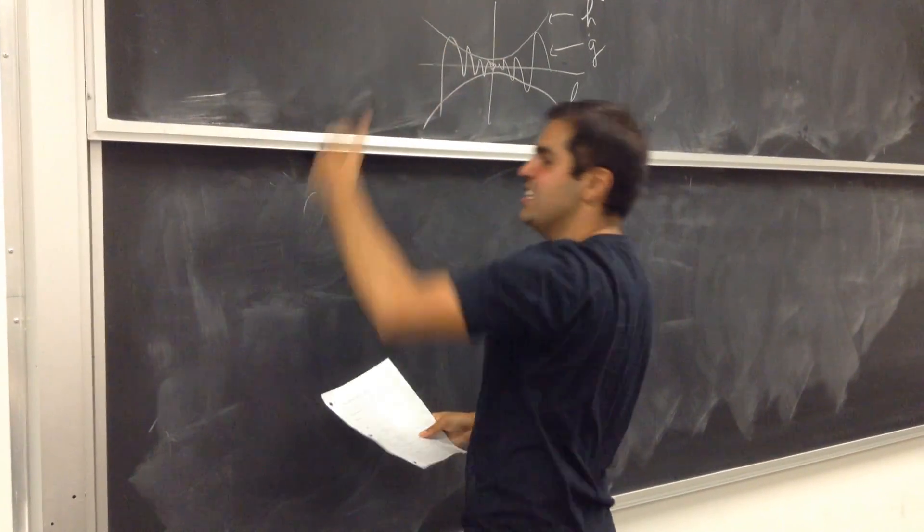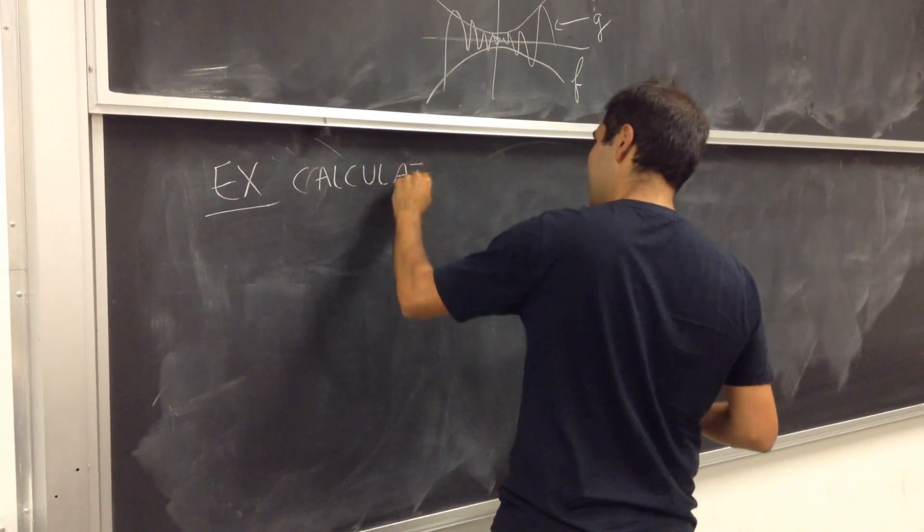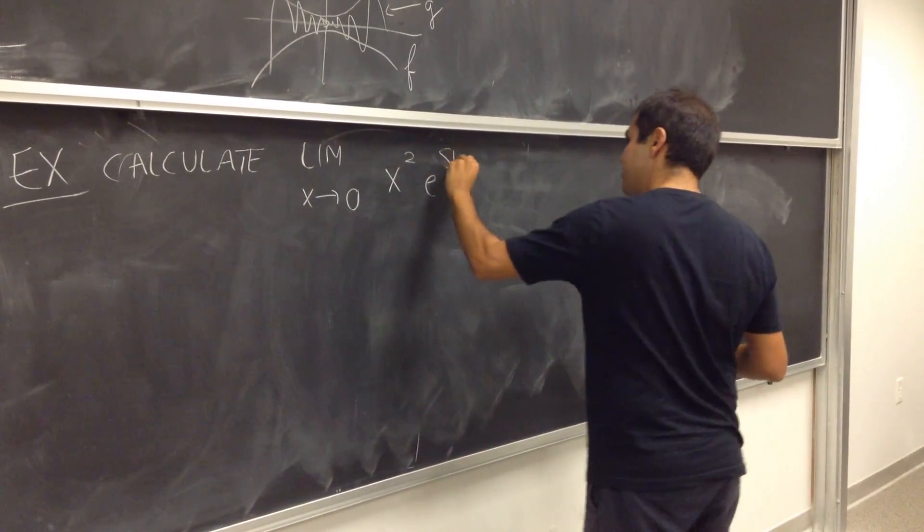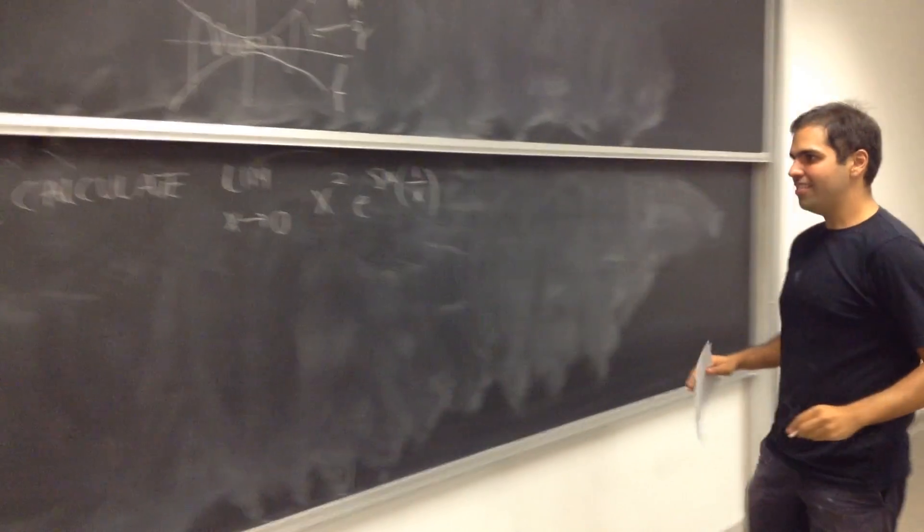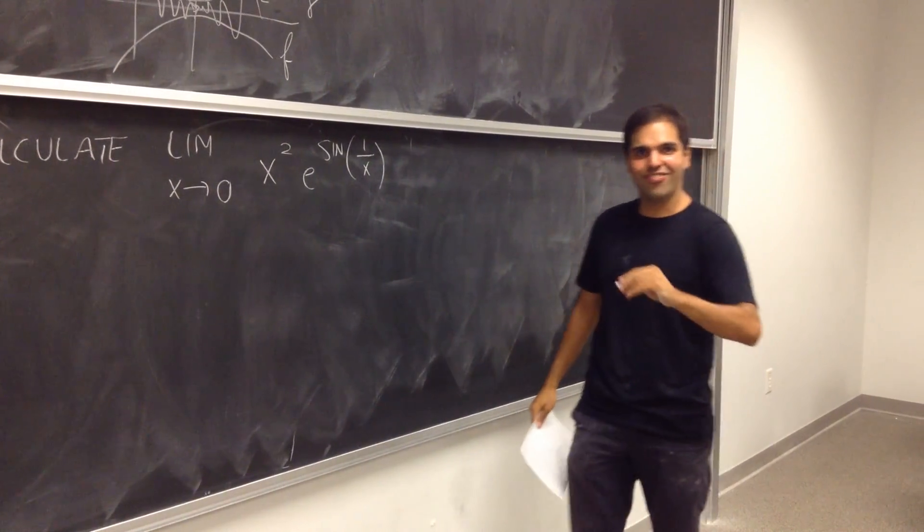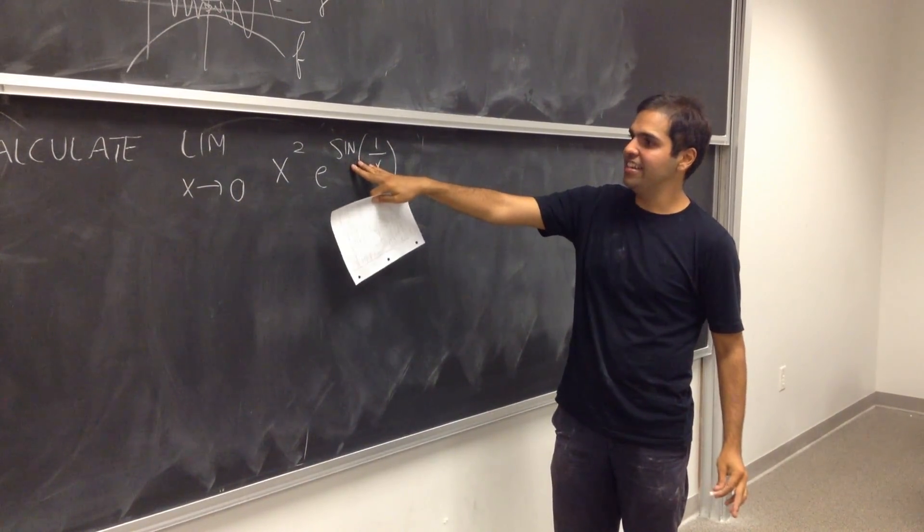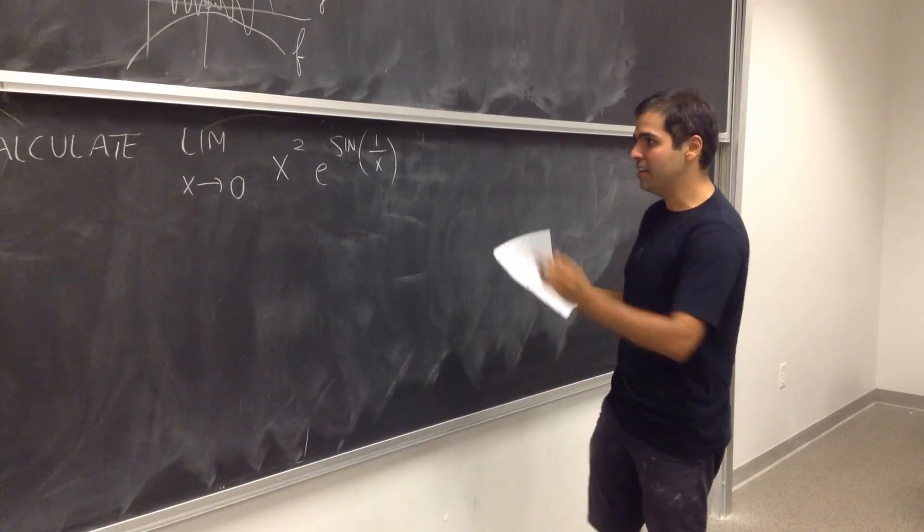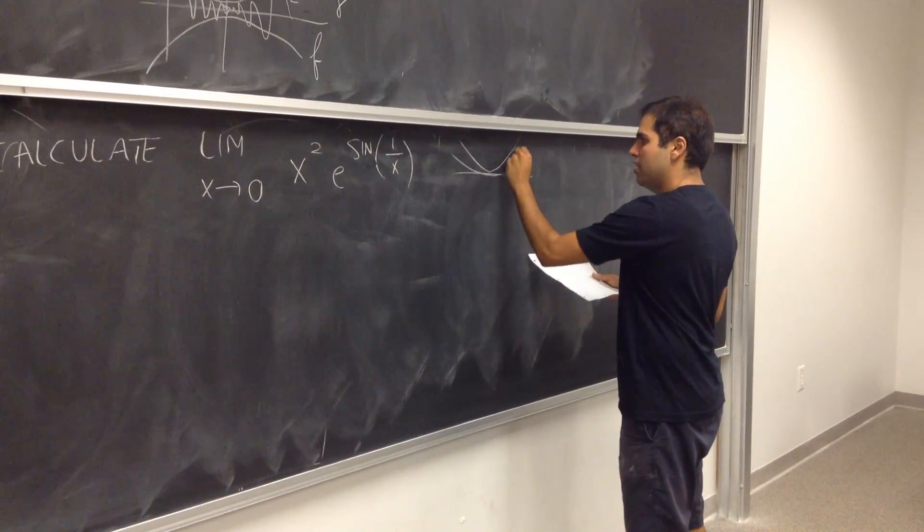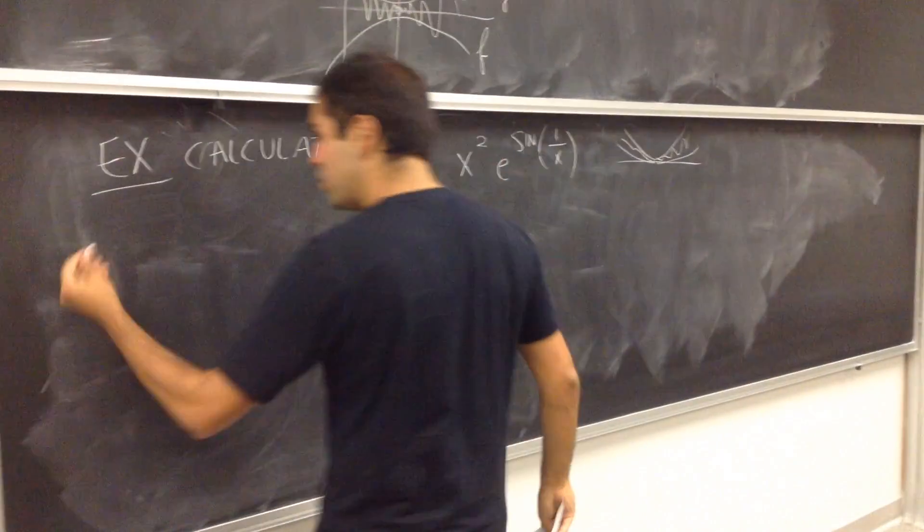And in fact, let's apply the squeeze theorem to the following example. Let's calculate the limit x goes to zero of x squared e of sine of one over x. And it's a very sine of one over x, in case you don't know. It's a very crazy function, thus oscillates like crazy at zero. However, even though this function oscillates like crazy, you can still calculate this limit, because, in fact, we will show that this function is squeezed between two easier functions, with the same limit as x goes to zero. So, how do we do this?